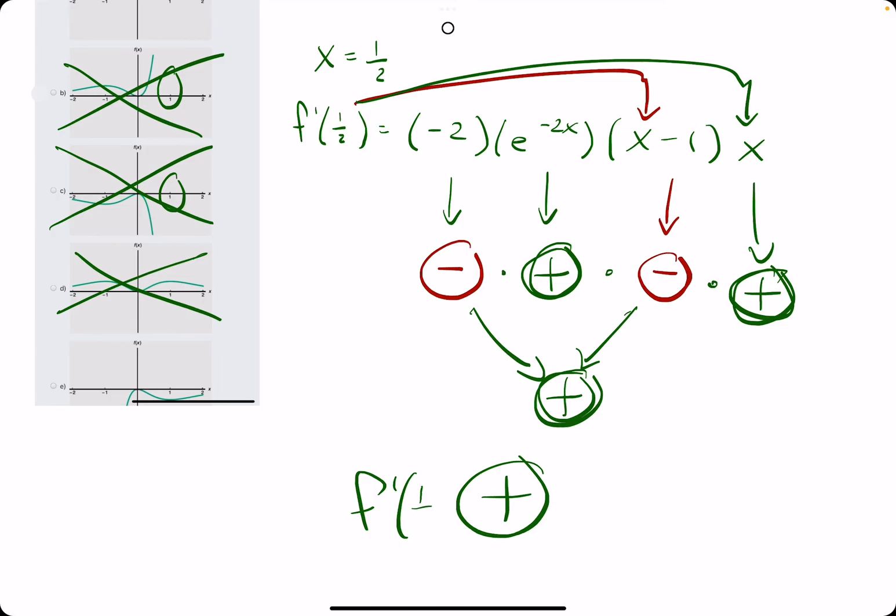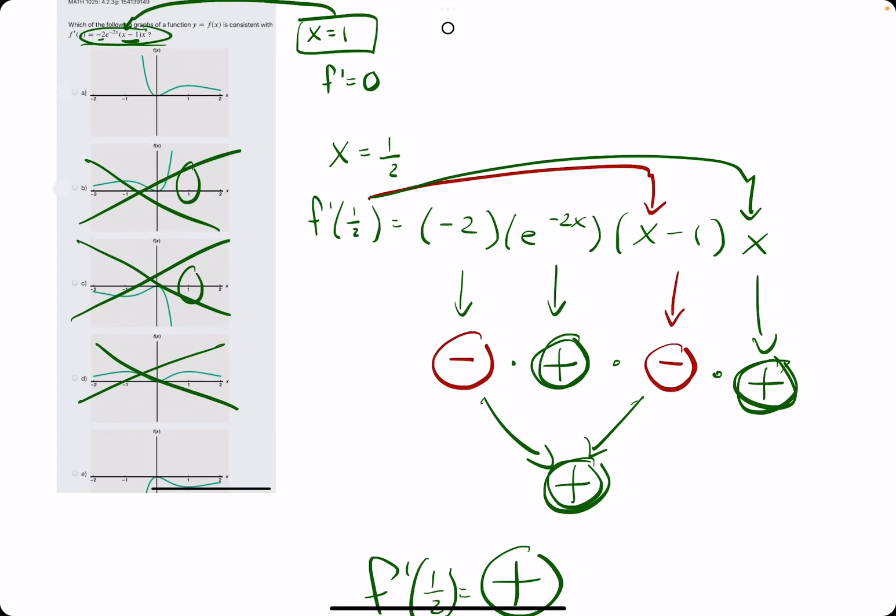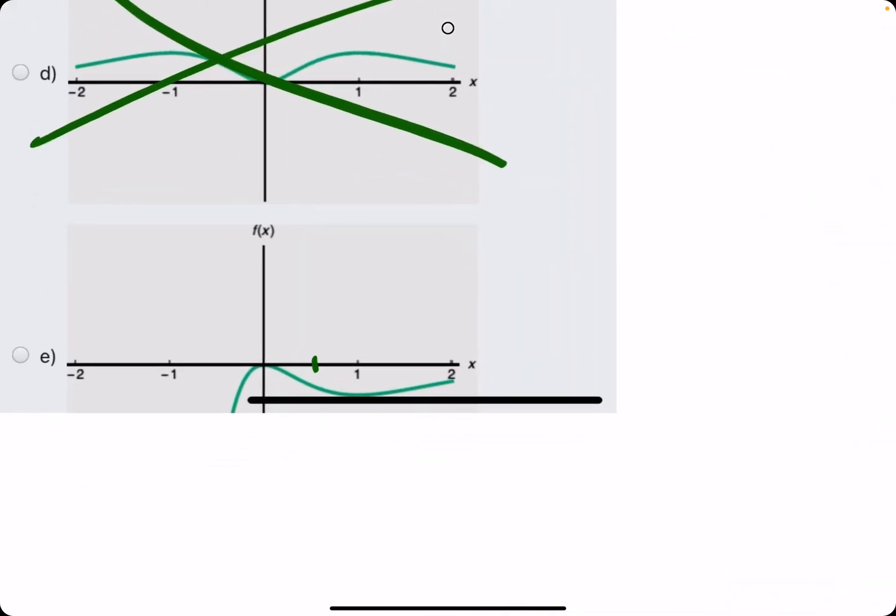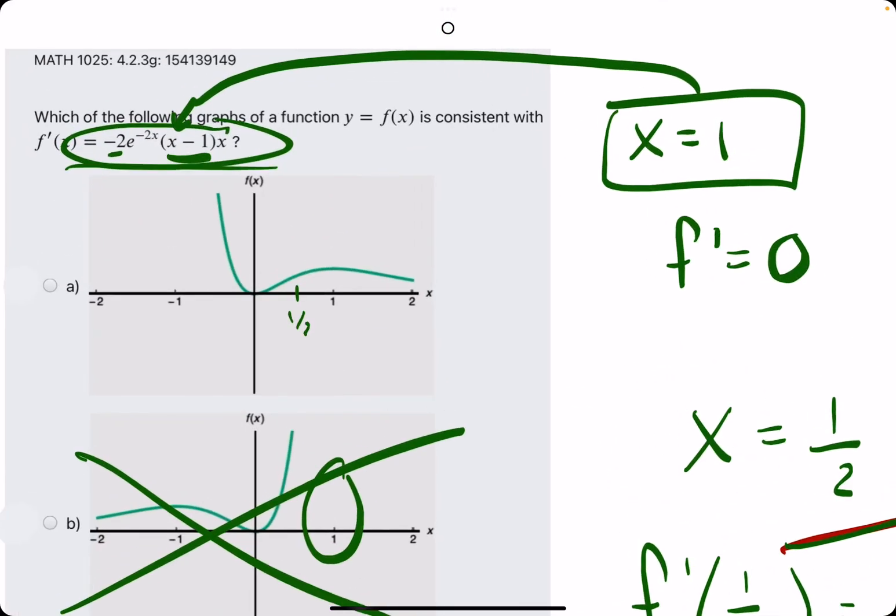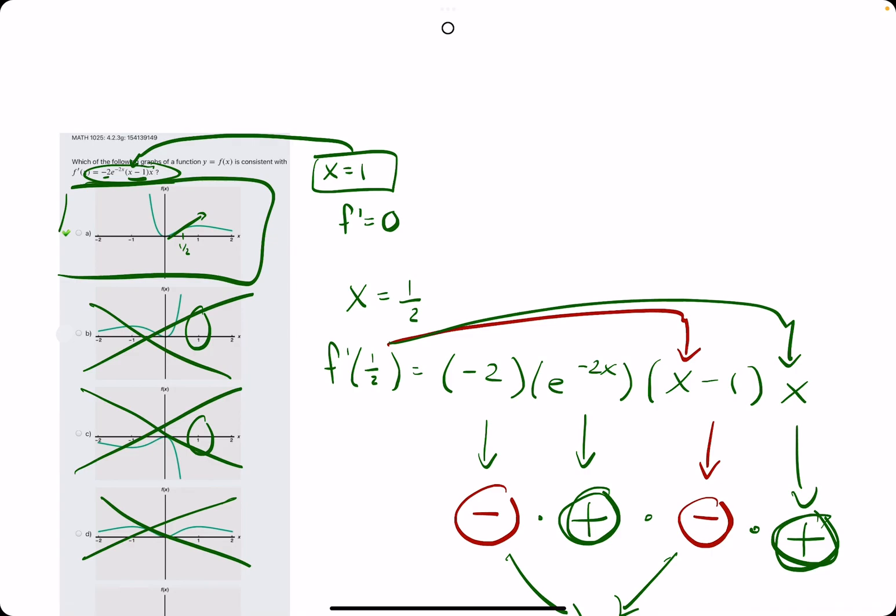So f prime of 1 half or at 1 half is positive, which means the slope of the function f at 1 half is positive. So looking very closely here, at 1 half we have a negative slope on this graph. At 1 half, we have a positive slope on graph A. So A is our answer.